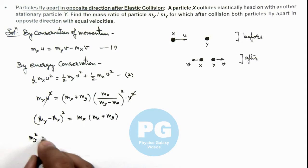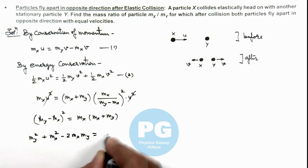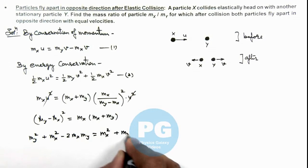my square plus mx square minus twice of mx my is equal to mx square plus mx my.